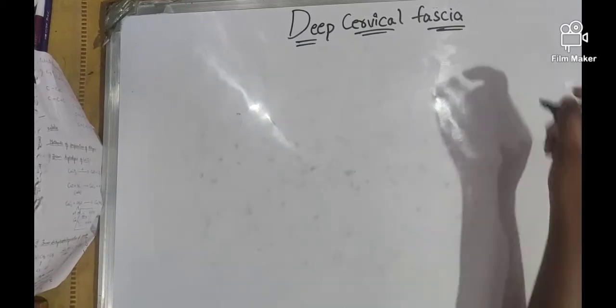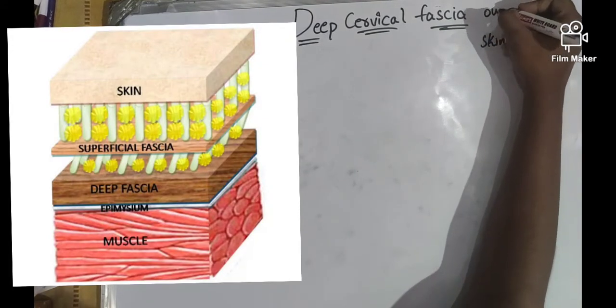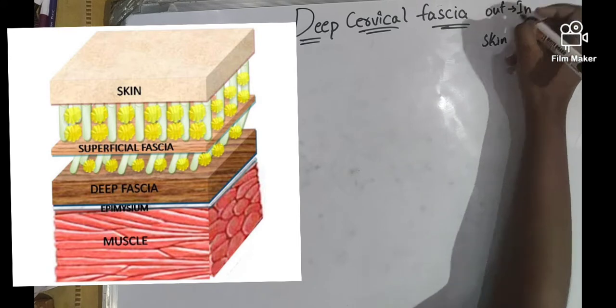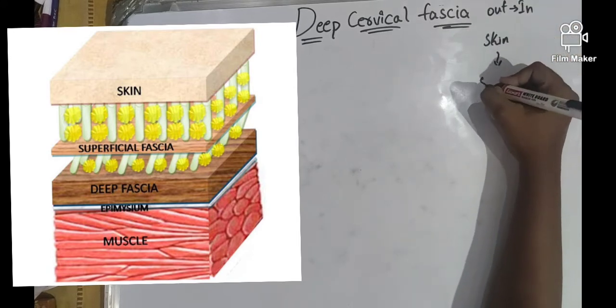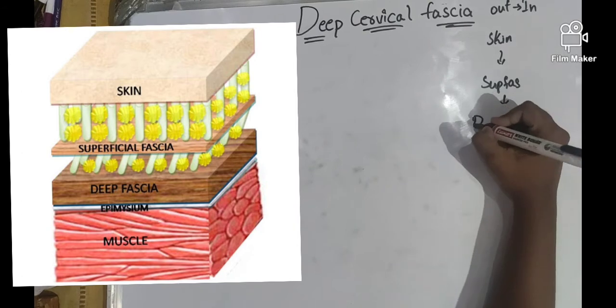Now I am going to explain the deep cervical fascia. When we come from outward to inward, we can see skin, superficial fascia, and then the deep cervical fascia.